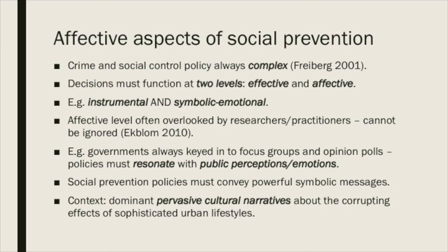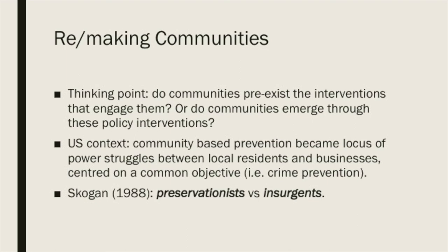Social prevention policies need to convey powerful symbolic messages, particularly in the present context where dominant cultural narratives tend to centre on the corrupting effects of urban life. When it comes to interventions in communities, there's a philosophical question: do communities pre-exist the interventions that engage them, or do communities emerge through these policy interventions — a chicken and egg kind of thing. In the US context, community-based social preventions ended up becoming the locus of power struggles between local residents and businesses, even though both were centred on the common objective of crime prevention.